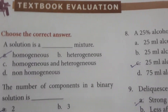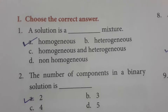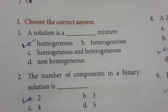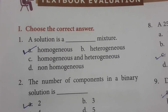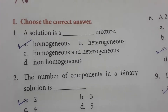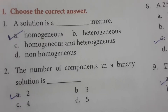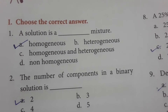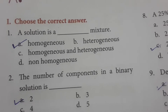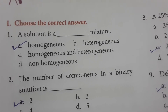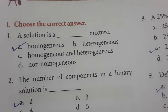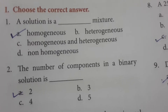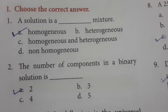First question: a solution is a blank mixture. A solution is a homogeneous mixture. 'Homo' means you cannot separate the particles — the dissolved particles. For example, if you have lime juice, you cannot separate the lime juice, sugar, and water. That is the characteristic of a solution — it is a homogeneous mixture.